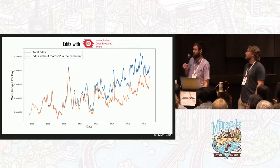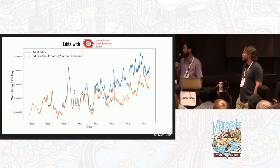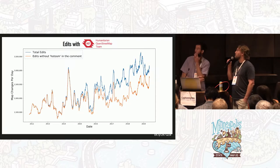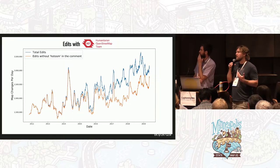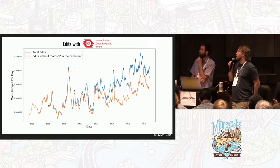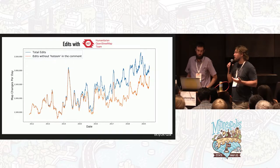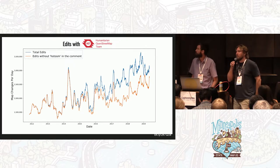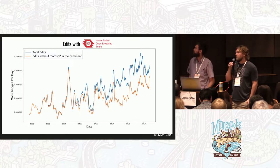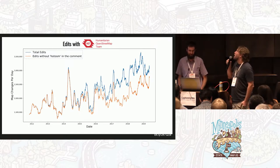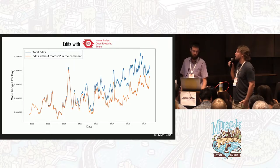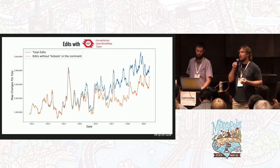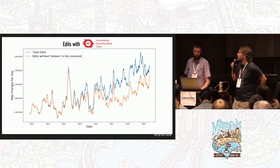This also talks to the prevalence of organized mapping — being able to break mapping efforts up into individual campaigns where people can focus on a particular area. The edits without 'hot OSM' in the comment come from the tasking manager being used; that comment gets automatically added. So it's not just HOT — it's potentially also other tasking managers. OpenStreetMapUS operates one, and these structural patterns of editing are occurring across the map.